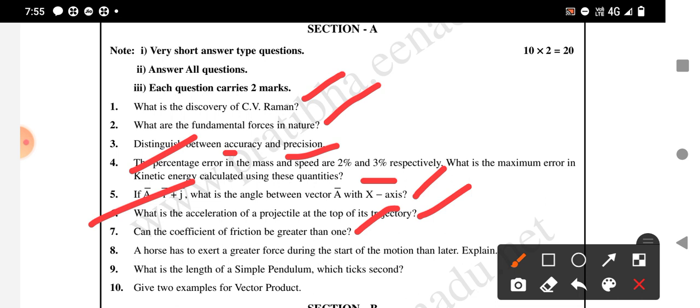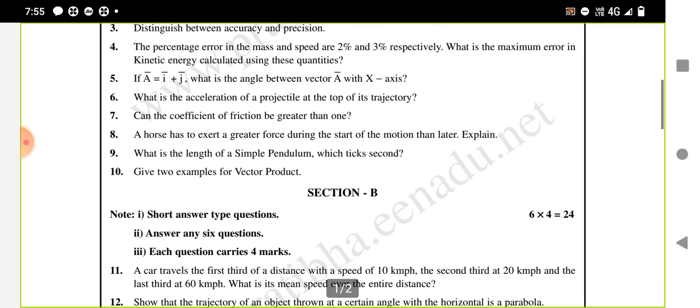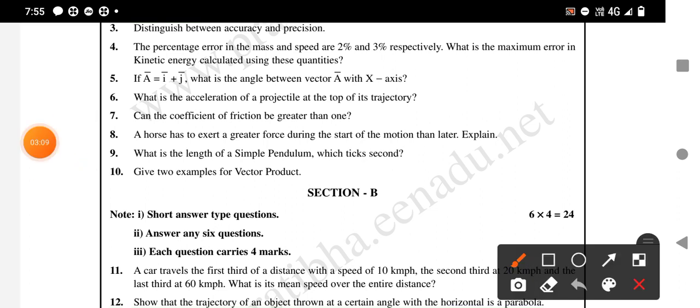Another one: a horse has to exert a greater force during the start of the motion than later, explain. And what is the length of the simple pendulum which takes one second? Then, what are the examples of vector product? Vector product, also called cross product, so give examples.